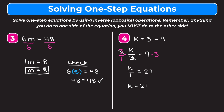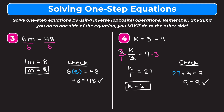To check our work, we plug 27 into our original equation: 27 divided by 3 equals 9. 27 divided by 3 is 9, so we get 9 equals 9, which is a true statement, confirming that k equals 27 is correct.